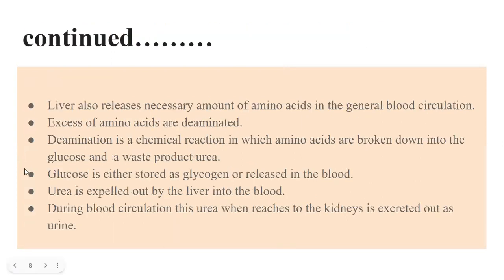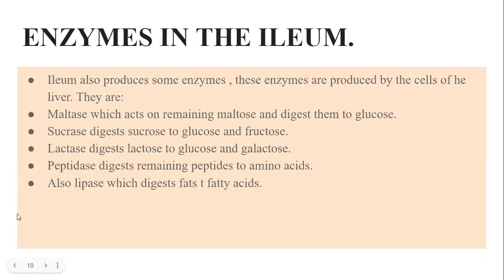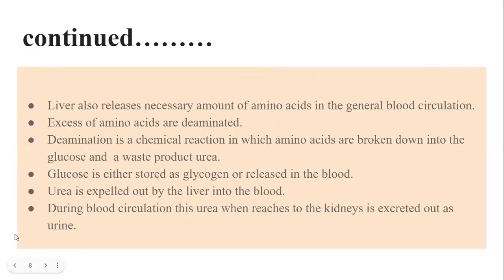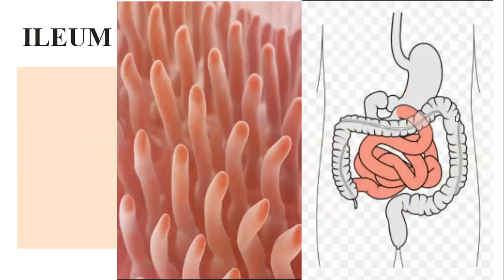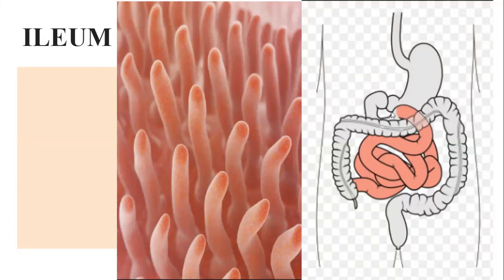The ileum has special adaptations for absorption. The first adaptation is its length — five to six meters. Since it is very long, a large number of food molecules can be held inside for a sufficient time, giving the blood ample opportunity to absorb them. Its length provides a very large surface area for the food molecules to diffuse into the blood.